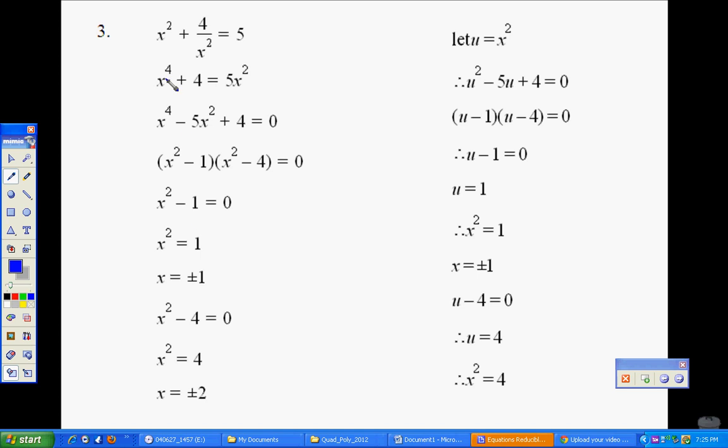What I do here is have the x squared plus 4 on x squared. Now the way to do this is to make sure we multiply through by x squared to get rid of that fraction. That gives us x to the power of 4 plus 4 is equal to 5x squared. Now when I collect all the terms on one side to make it equal to 0, we get x to the power of 4 minus 5x squared plus 4 is equal to 0.